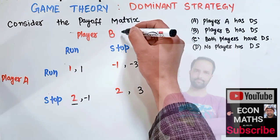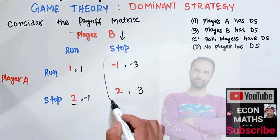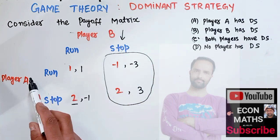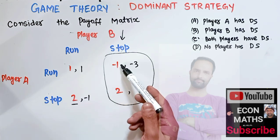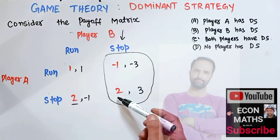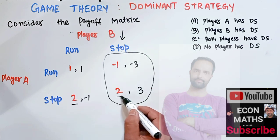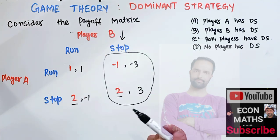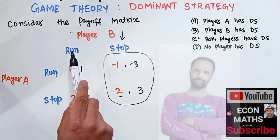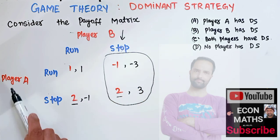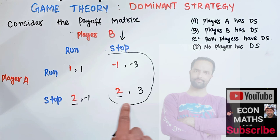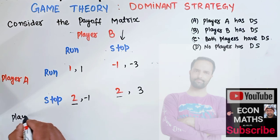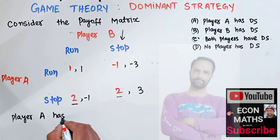Now let us see what happens when player B chooses to stop. When player B chooses to stop, player A again has two options: run gives him a payoff of negative 1, stop gives him a payoff of 2. Since 2 is greater, he will choose stop. No matter what player B chooses — run or stop — player A will always choose stop, because stop gives him more payoff. So we can say player A has a dominant strategy.